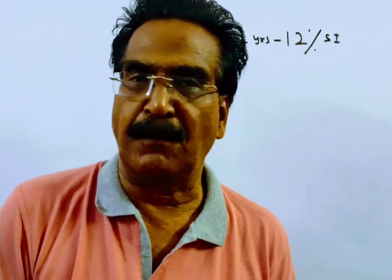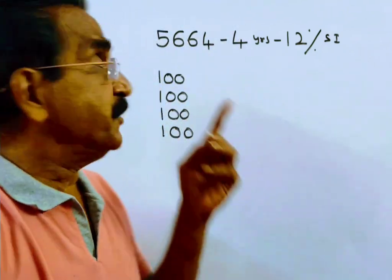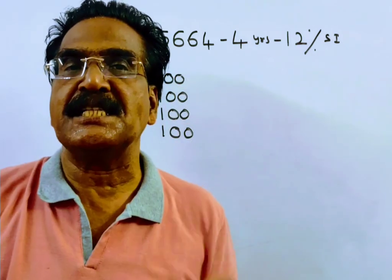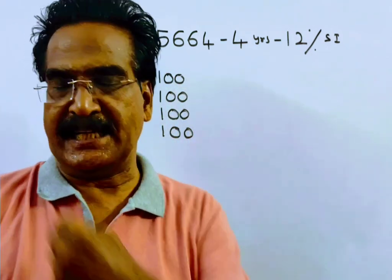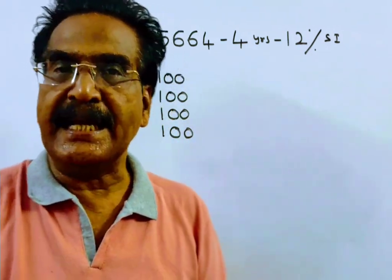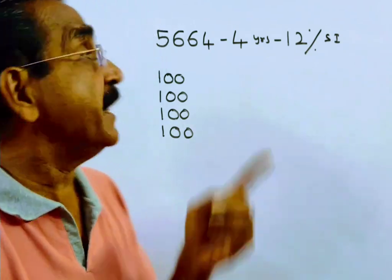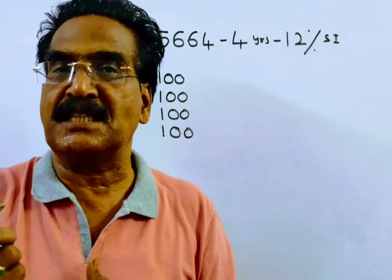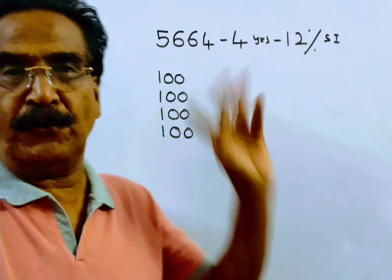Friends, the problem is given in the description box. Here the due amount is 5,664 rupees in 4 years. So you have to accumulate an amount of rupees 5,664 in 4 years.